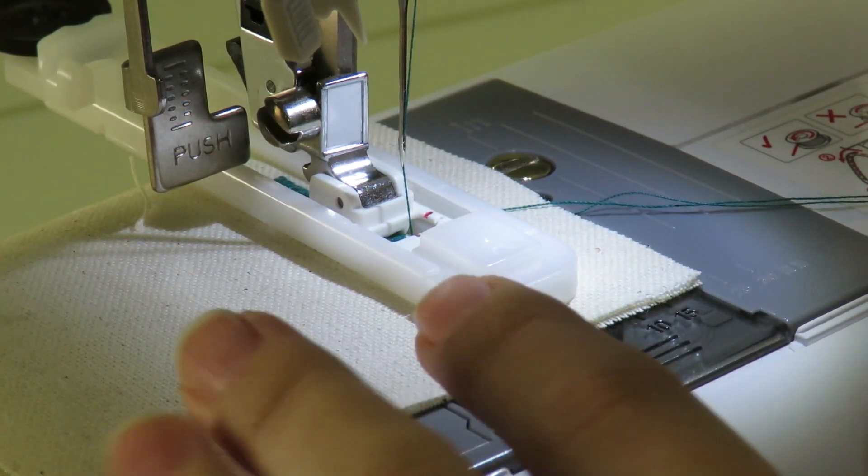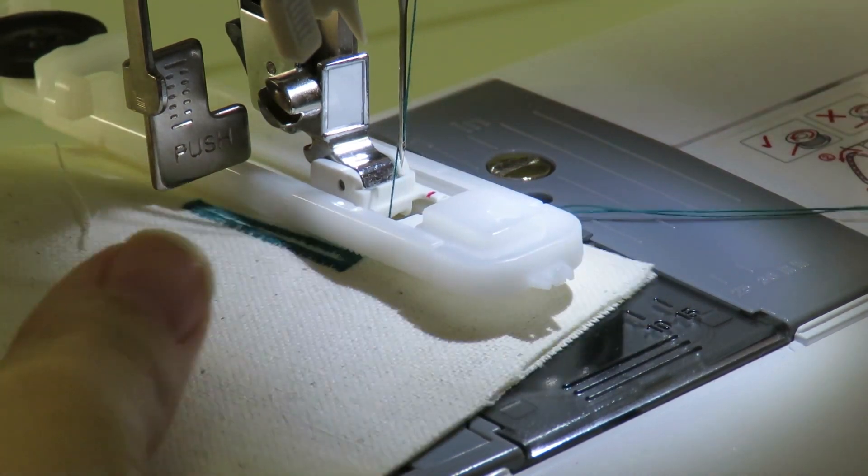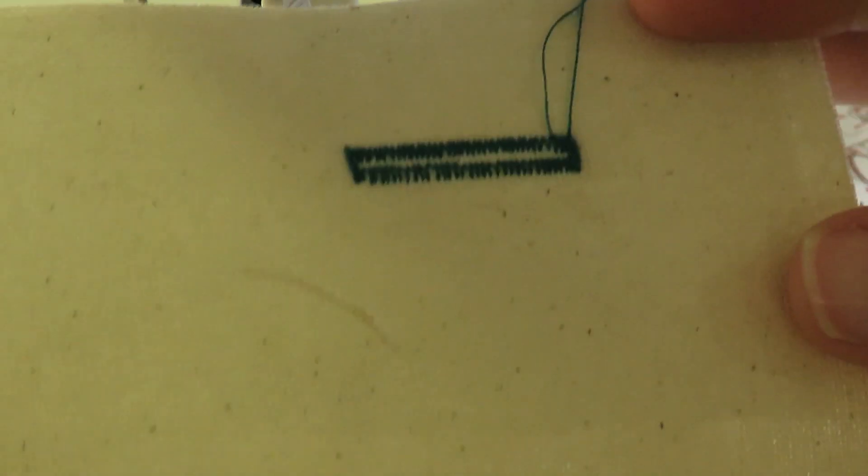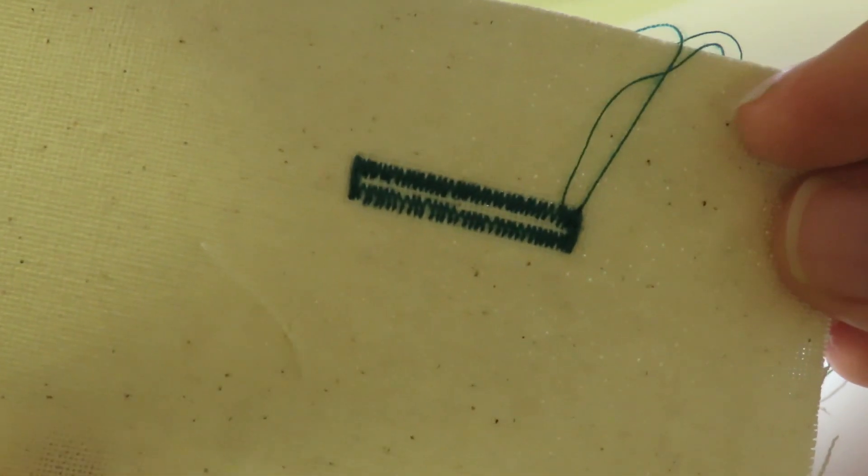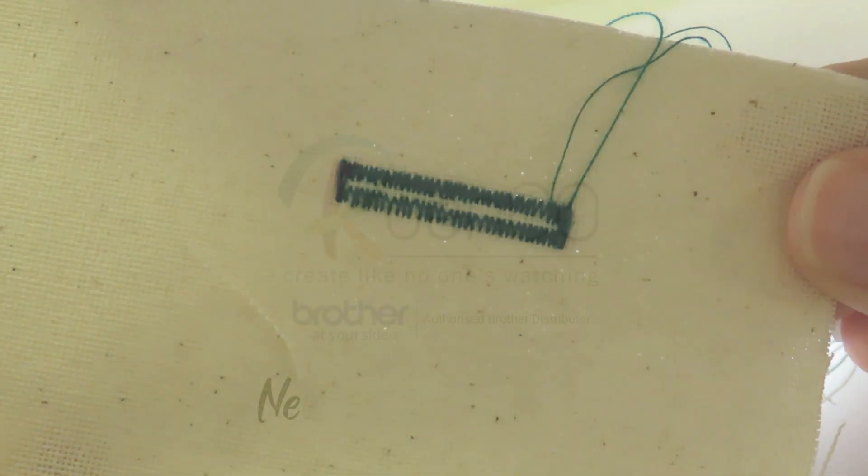As you can see now, both legs of the buttonhole are even. You might have to adjust the screw a little more depending on the type of fabric you use.